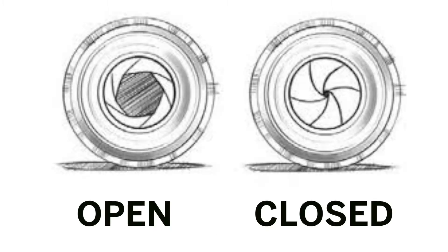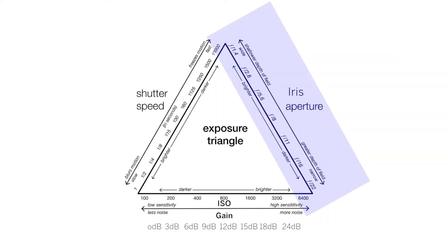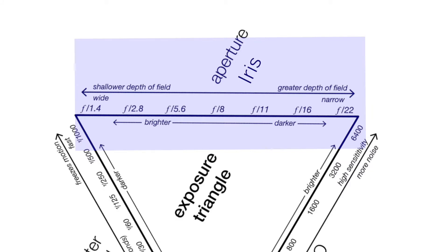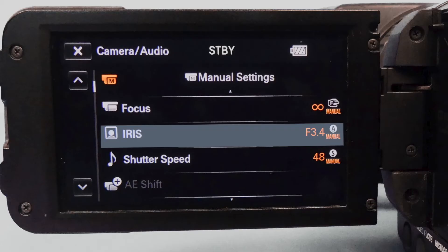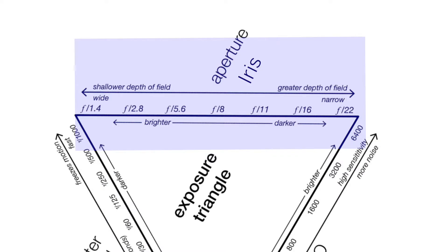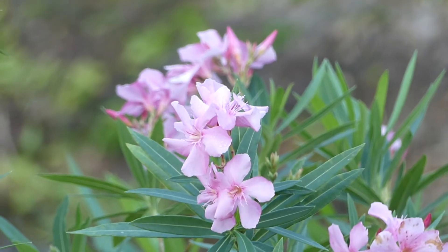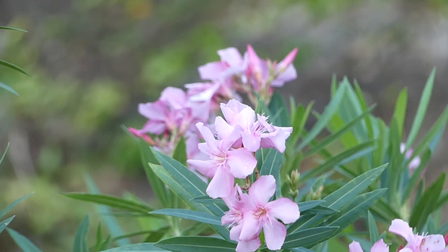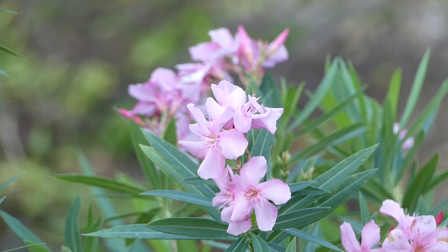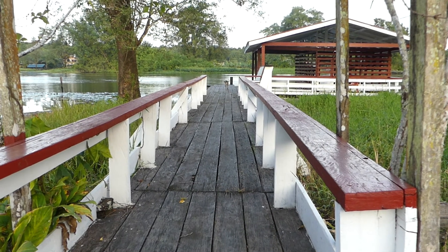First, the iris opens or closes to allow more light or limit the light. It is expressed in f-stops, which are fractions — 1/5.6 is a larger opening than 1/16, usually expressed simply as 5.6 or 16. So 5.6 allows more light in than 16. Openings larger than 5.6 can create a shallow depth of field, so the background is blurred. Everything remains in focus with a small aperture like 16.